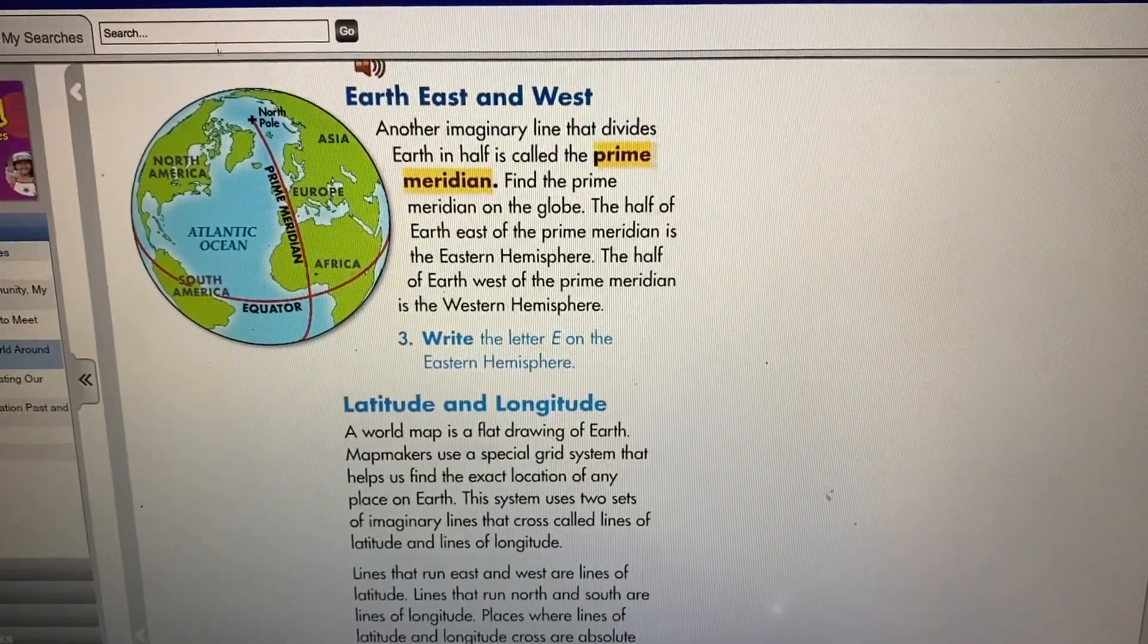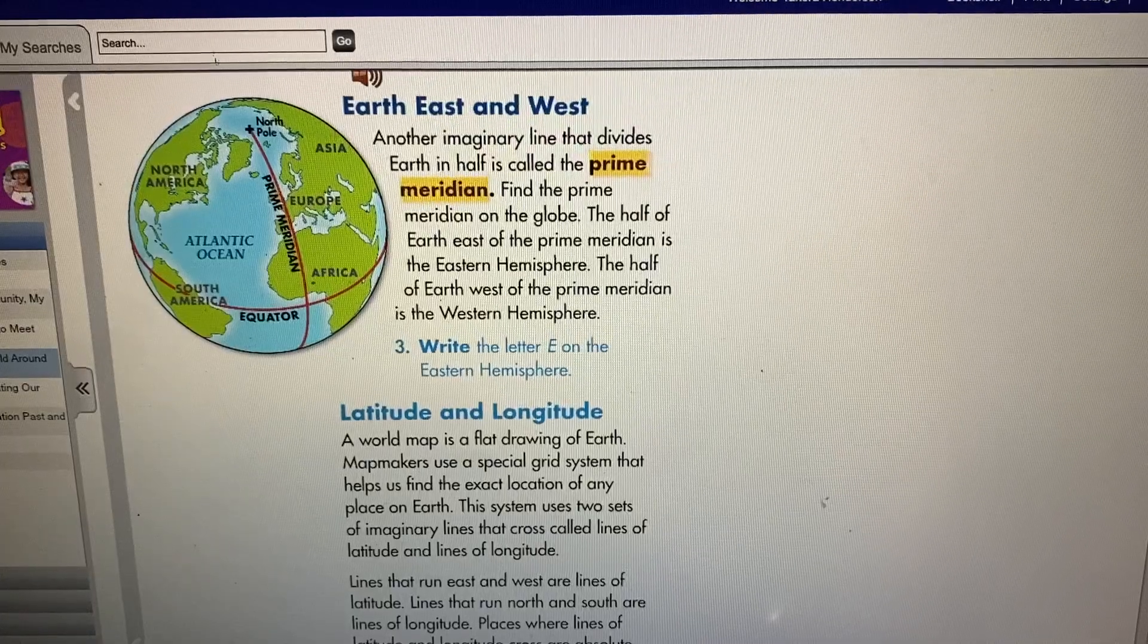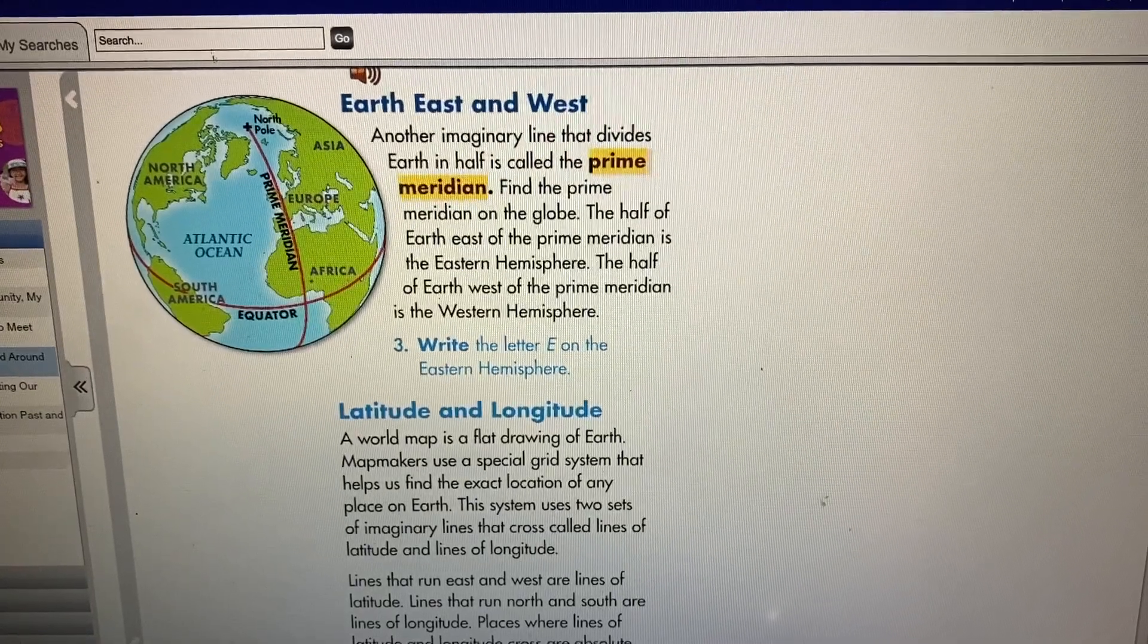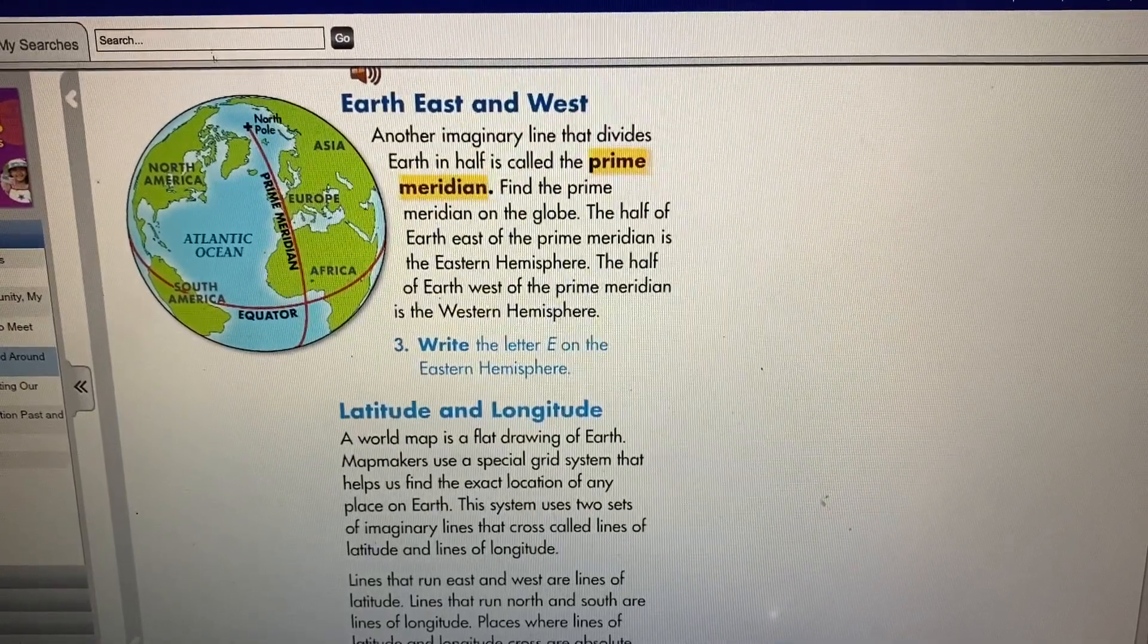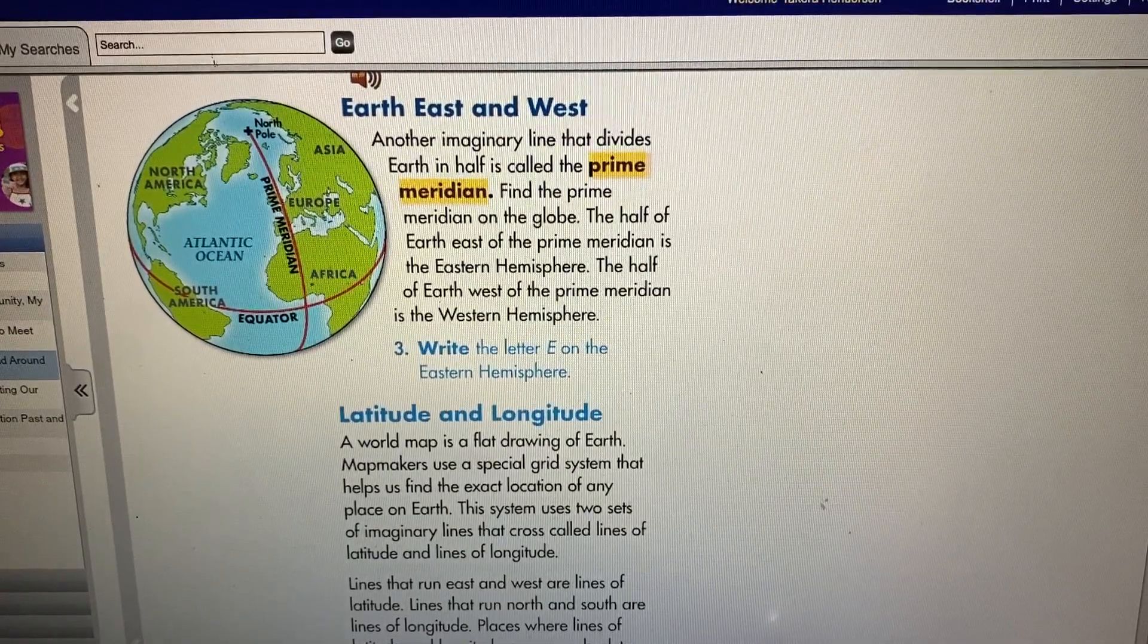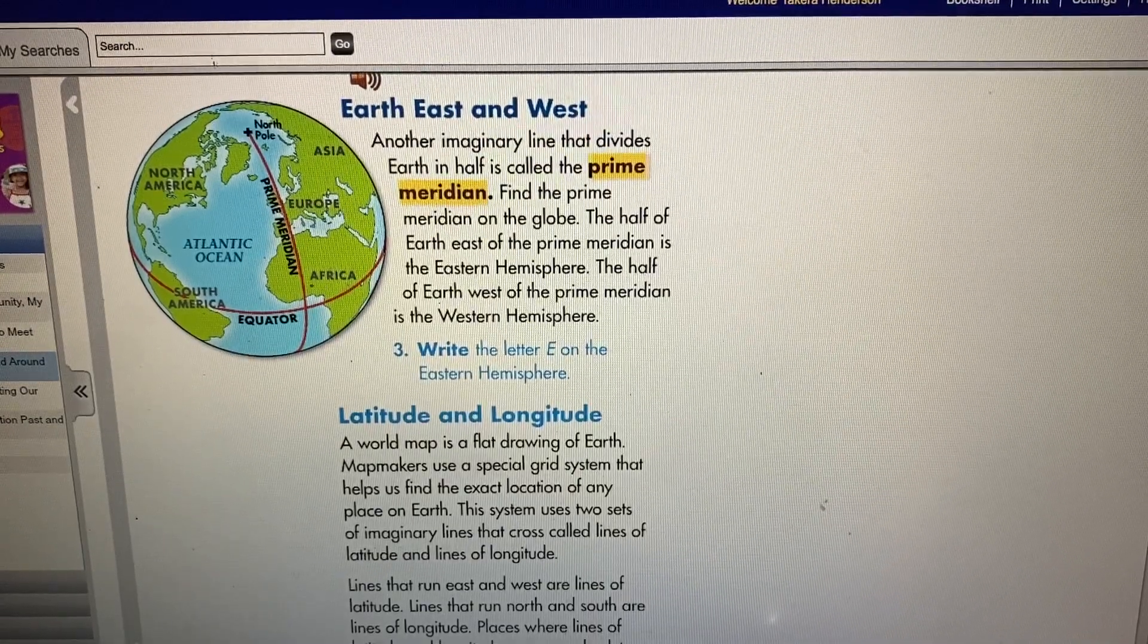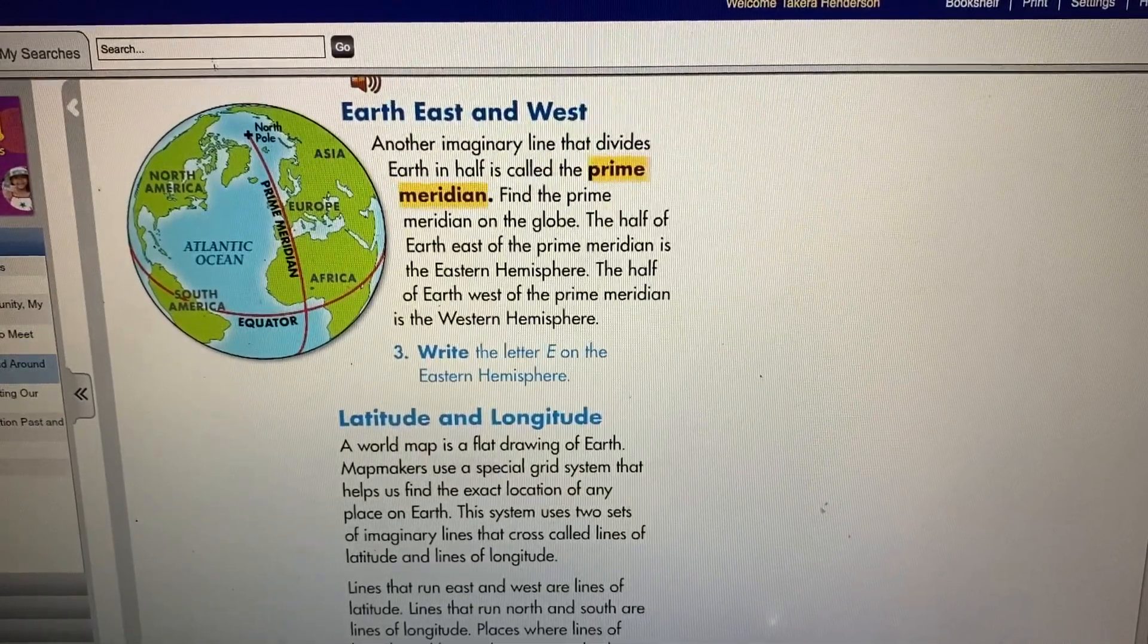Earth, East, and West. Another imaginary line that divides Earth in half is called the Prime Meridian. Find the Prime Meridian on the globe. The half of Earth east of the Prime Meridian is the Eastern Hemisphere. The half of Earth west of the Prime Meridian is the Western Hemisphere.